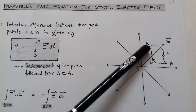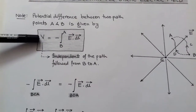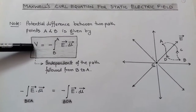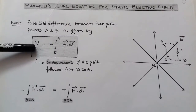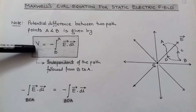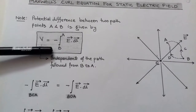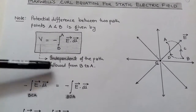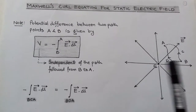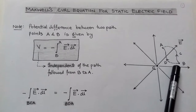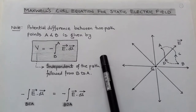There is a potential difference between point A and B, which is given by the formula: potential difference V equals minus integration of E dot dL. The potential is independent of the path followed from B to A. So no matter how many paths we take from B to A, the potential difference is the same — it is independent of the path.